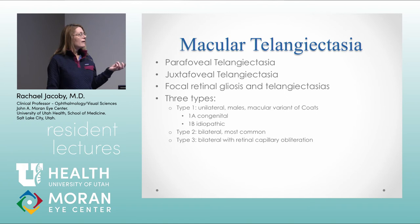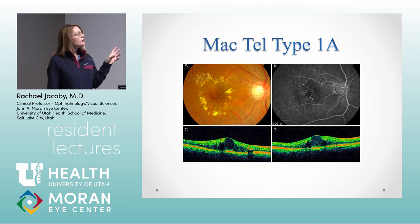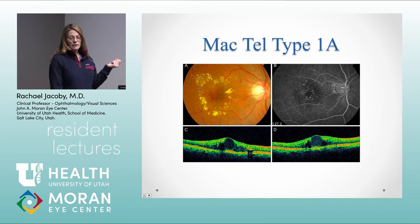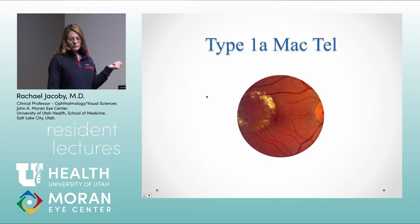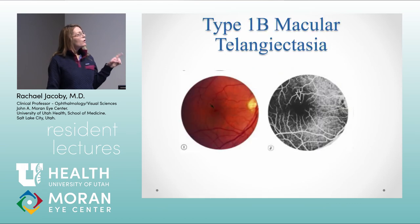Type 3 macular telangiectasia is really rare — bilateral disease with retinal capillary obliteration. Type 1 shows a lot of exudation similar to Coat's disease, but in the temporal macula, with possible macular edema. Type 1b (the acquired form) is often seen in middle-aged males with just a couple of small microaneurysms, excellent vision, and a very good visual prognosis — usually not treated at all.